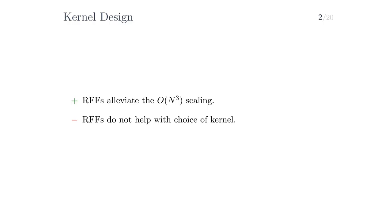A kernel can be designed by coming up with a parameterization that encodes one's assumptions about the underlying function. But this is not always easy to do, because it can be unclear how these assumptions may be encoded into a kernel, and the kernel must be a positive definite function.